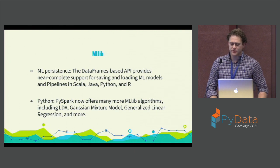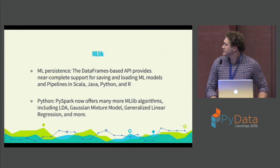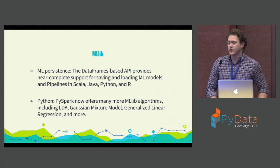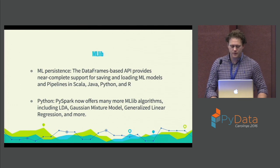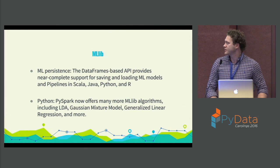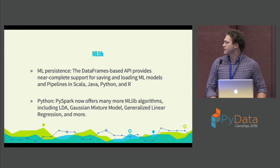For the machine learning library MLlib, you have model persistence, and you're also able to pipeline your data much better than in previous releases. The pipelines are pretty similar across the different languages — Scala, Java, Python, and R. There are many more machine learning models available, including linear regression, Gaussian mixture modeling, generalized linear regression, and more — all of which were missing from earlier releases.